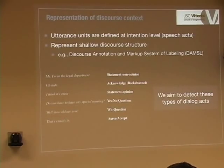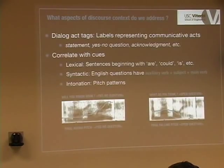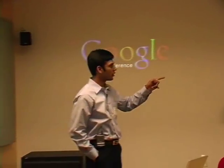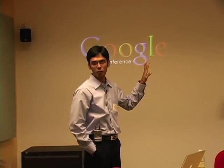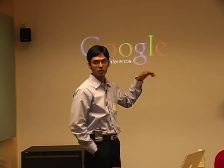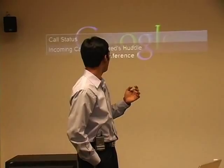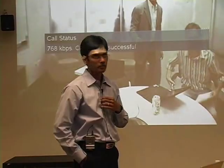Regarding inter-annotator agreement: for dialogue acts it's about 84%, which is a kappa score of about 0.8 — that's reliable. For the prosody part, it ranges from 80 to 90% depending on the corpus. For spontaneous speech it's slightly less accurate; for read speech it's much more accurate.